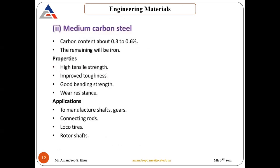After low carbon steel, the next type is medium carbon steel, also known as mild steel. In this, the carbon content is from 0.3 to 0.6%, the remaining being iron. Main properties are: high tensile strength, improved toughness, good bending strength, and it is highly wear resistant. Medium carbon steel is used to manufacture shafts and gears, connecting rods, locomotive wheels, and rotor shafts.